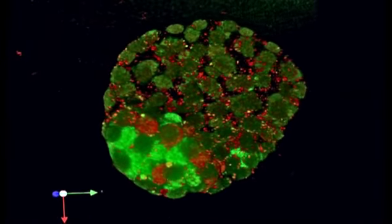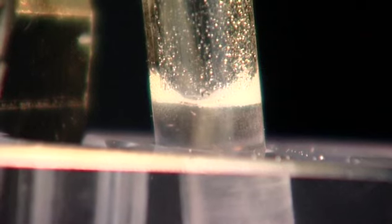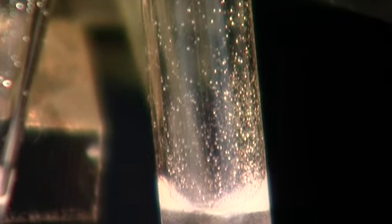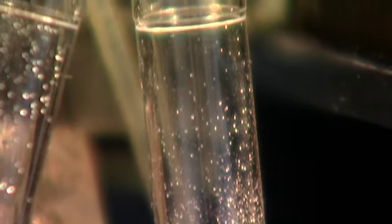So this is really useful because it means not only can we identify, but we can also purify them, because we can use special machines which can detect the fluorescent cells and pull them away from the other cells, so we end up with a pure population of the specialized cell type.